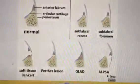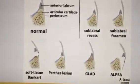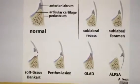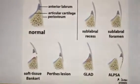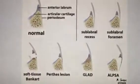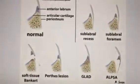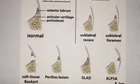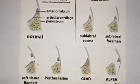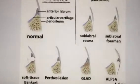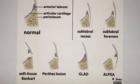The Bankart lesion, or the soft tissue Bankart, is the most common one. In this lesion, the periosteum and the labrum are displaced. We also have a bony Bankart — it's the same pathophysiology, but part of the bone has fractured. So it's not only periosteum; there's actually a fragment of bone that is also involved in the injury.